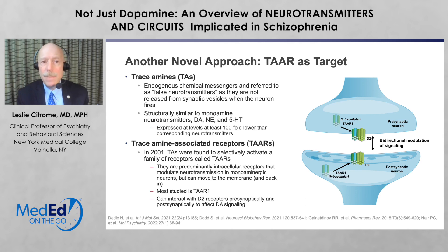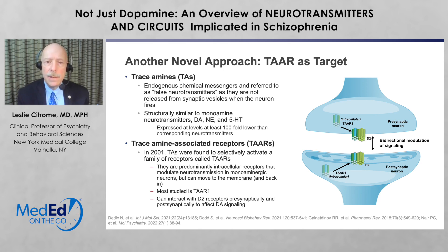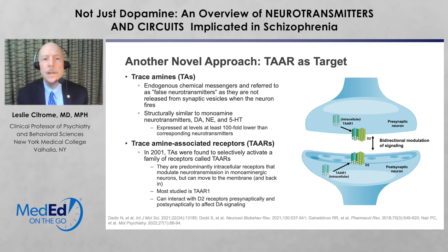Another novel approach involves trace amines and their receptors. Trace amines are endogenous chemical messengers referred to as false neurotransmitters, as they're not released from the neuron when the neuron fires. They're structurally similar to monoamine neurotransmitters such as dopamine, norepinephrine, and serotonin, and are expressed at very low levels. The trace amine-associated receptors were discovered not that long ago and help modulate these monoamines implicated in schizophrenia. TAAR1 is the most studied, and it can dimerize with dopamine receptors to alter dopaminergic signaling, potentially reducing psychotic symptoms — as evidenced in a phase two trial of a medicine called ulotaront. Stay tuned for that one.